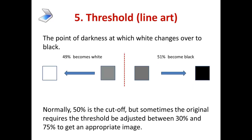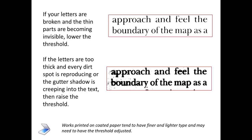The next thing you should control on your scanner is the threshold, and this is used for line art. The threshold is the point of darkness at which white changes over to black. If the laser finds something that's 49% black, that goes to white; if it's 51%, that goes to black. Normally 50% is the cutoff, but you can adjust the threshold, and sometimes you need to — sometimes between 30% up to 75% to get an appropriate image. In the top example, the threshold is too high and the type is fading away — you're losing the thins and getting holes. In the bottom sample, the threshold is too low and you're getting every piece of dirt and shadow, and the type is all too fat. Works printed on coated paper, like art books or photography books, tend to have finer and lighter type and may need the threshold adjusted.